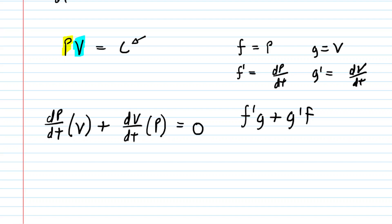Next we want to solve this equation for what we're trying to compute, and that would be the dv dt. So a little bit of algebraic manipulation will follow here. We're going to subtract both sides of this equation by dp dt times v. That way it will cancel out on the left-hand side.